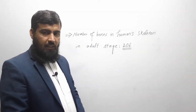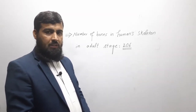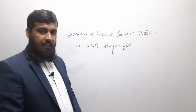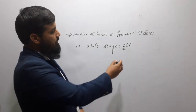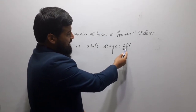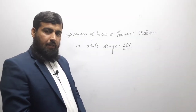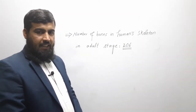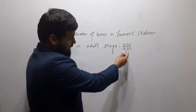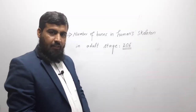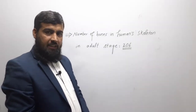Most biological as well as medical sites tell that the number of bones in the human skeleton in the adult stage is 206, but actually this number is the average number — this is the general number. There are some individuals in the human population that have fewer than 206 bones in their skeleton, while there are individuals who have more than 206 bones in their skeleton.